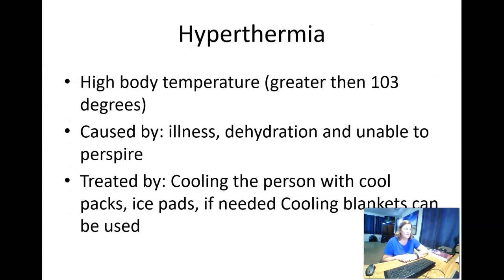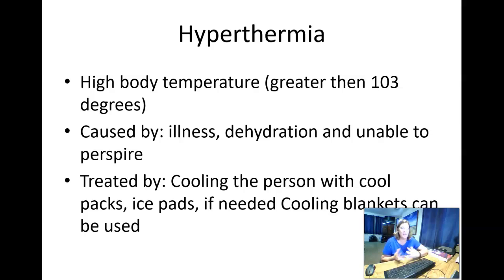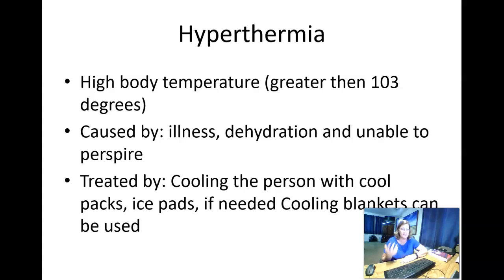The term hyperthermia means high body temperature — usually greater than 103 degrees. It can be caused by illness, dehydration, or being unable to perspire. Not being able to perspire is actually very dangerous because that's one of the ways your body gets rid of extra heat. When you can't perspire and you're running a fever, or you're exercising and your body can't shed that extra heat, hyperthermia can happen — and it's very dangerous.